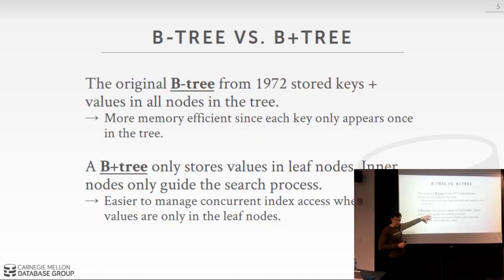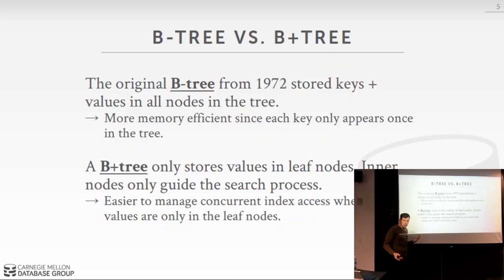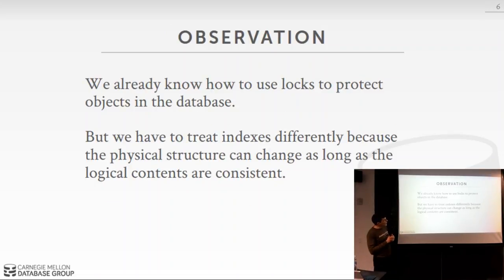B+ trees are preferred because managing concurrent access to a B-tree is more difficult. In a B+ tree all operations emanate from the leaf nodes. In a B-tree you could have to do a split or merge at a higher level while someone below is also doing a split or merge. In practice everyone implements the B+ tree with variations like B-link trees and B-star trees.